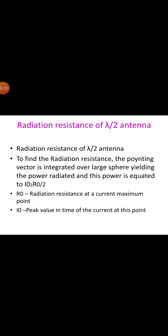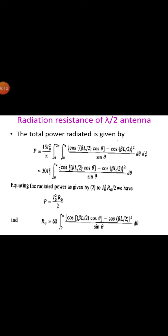Now let us look at the radiation resistance of the lambda/2 antenna. To find the radiation resistance, the Poynting vector is integrated over a large sphere, yielding the power radiated. This power is then equated to (I_0/√2)² * R_0, where R_0 is the radiation resistance at the current maximum point and I_0 is the peak value of the current. The total radiated power P is given in terms of H_phi, and the corresponding H_phi for a linear antenna is obtained by putting j*I_0 = I_0.